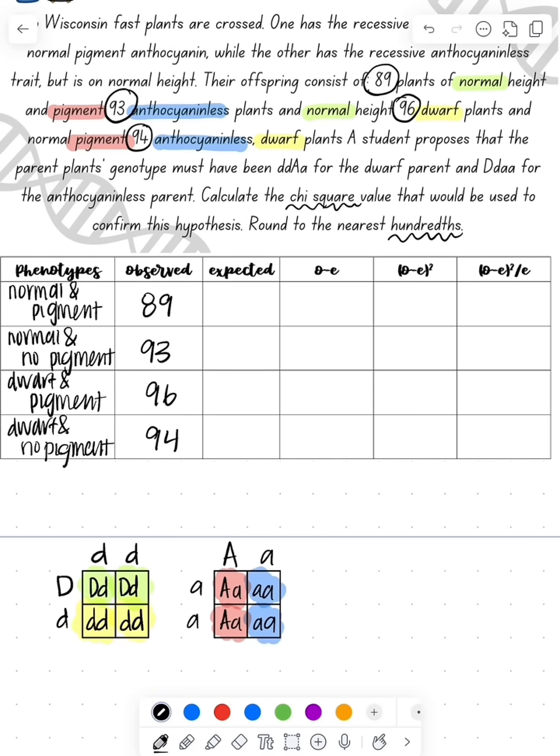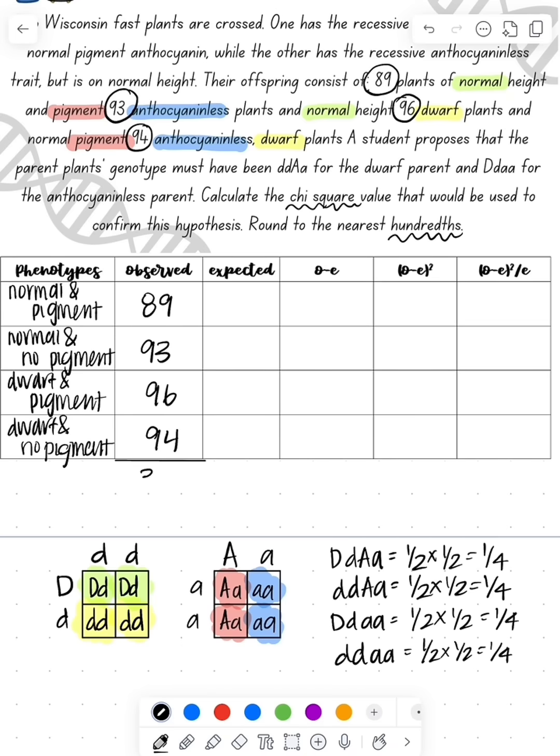So now we're going to multiply these probabilities together to find dwarf and pigmented. So dwarf and pigments can be one half times one half, which gives us one fourth. And we do that same math for the other three possible genotypes we had in our Punnett square. So one fourth of them should be of each of these different ones we expect. So 372 times one fourth will give me that we expect 93 of each of them.